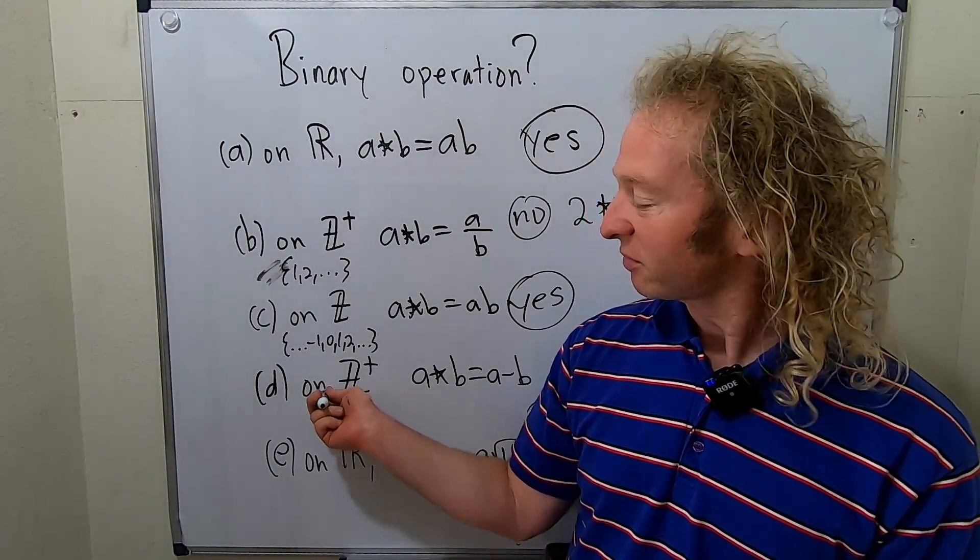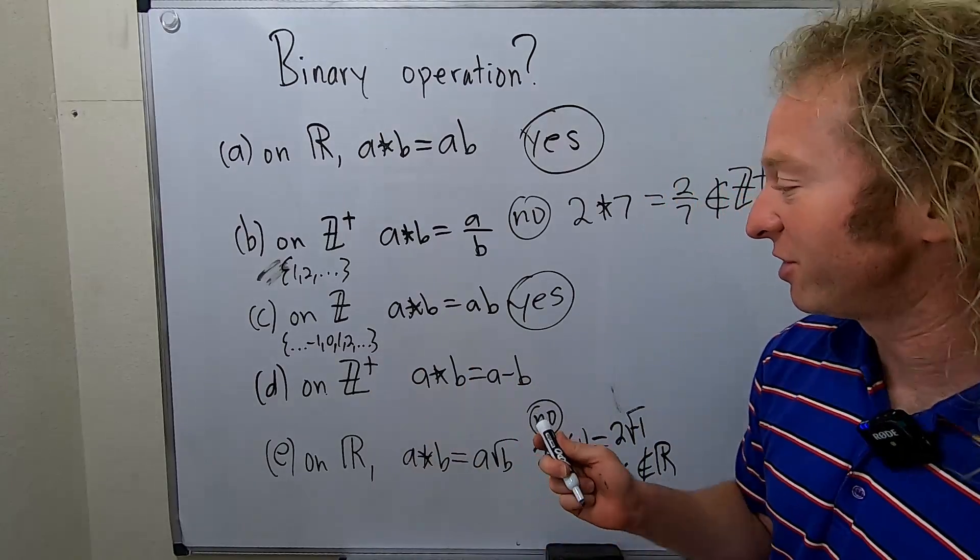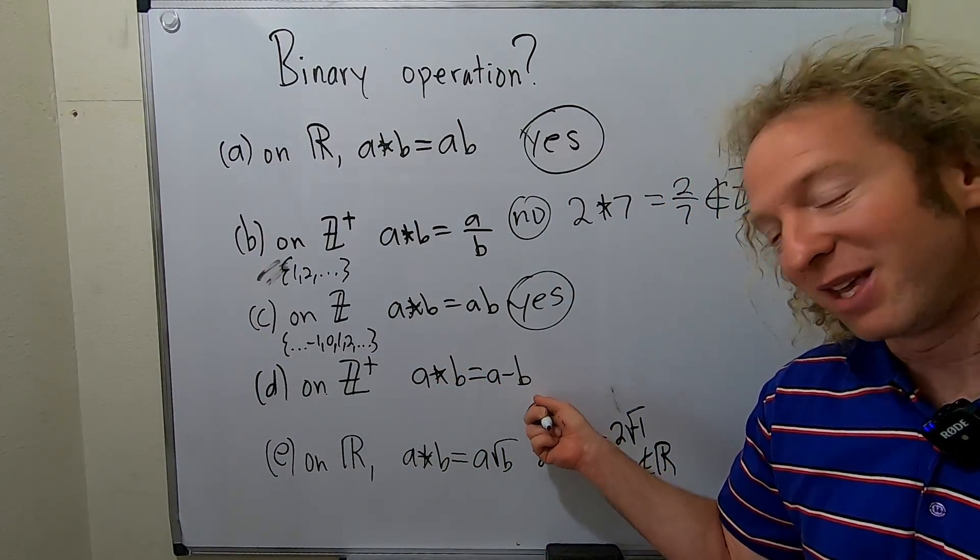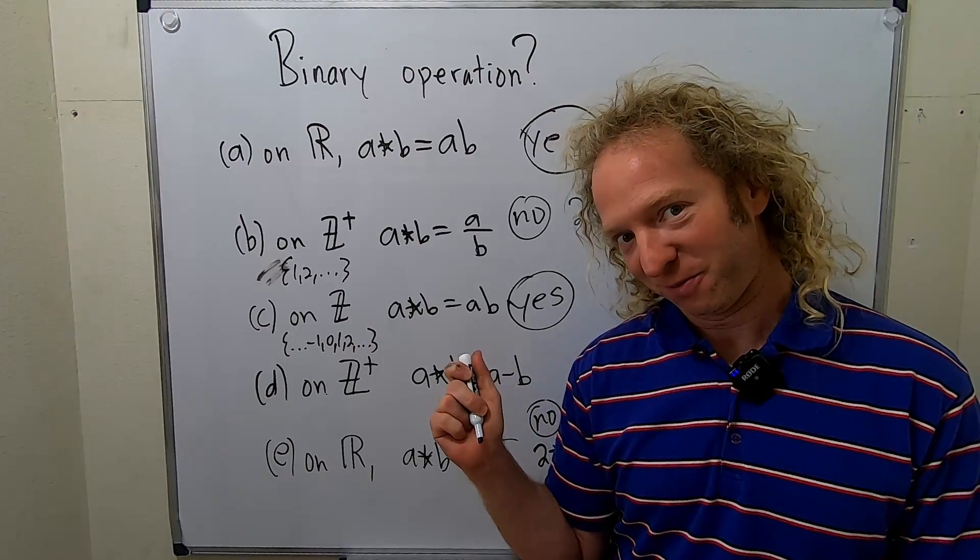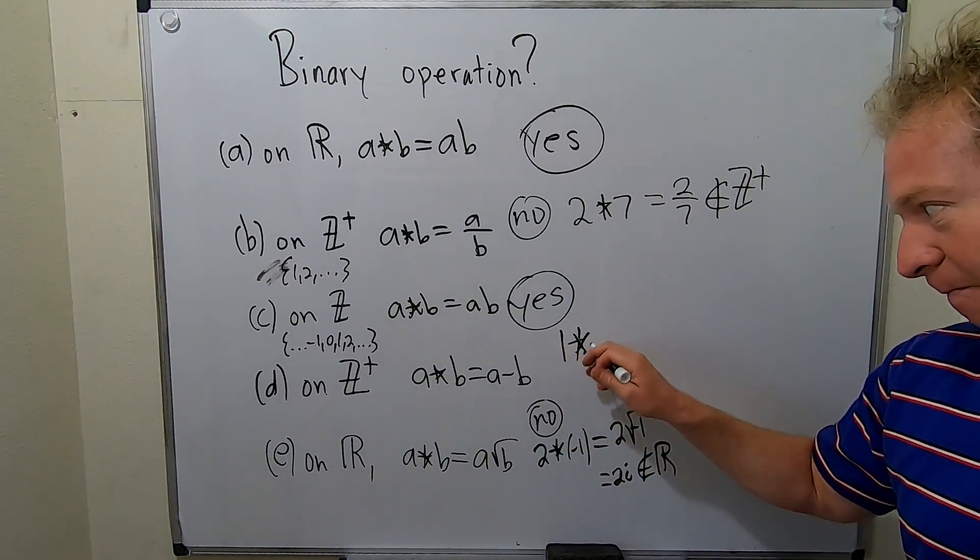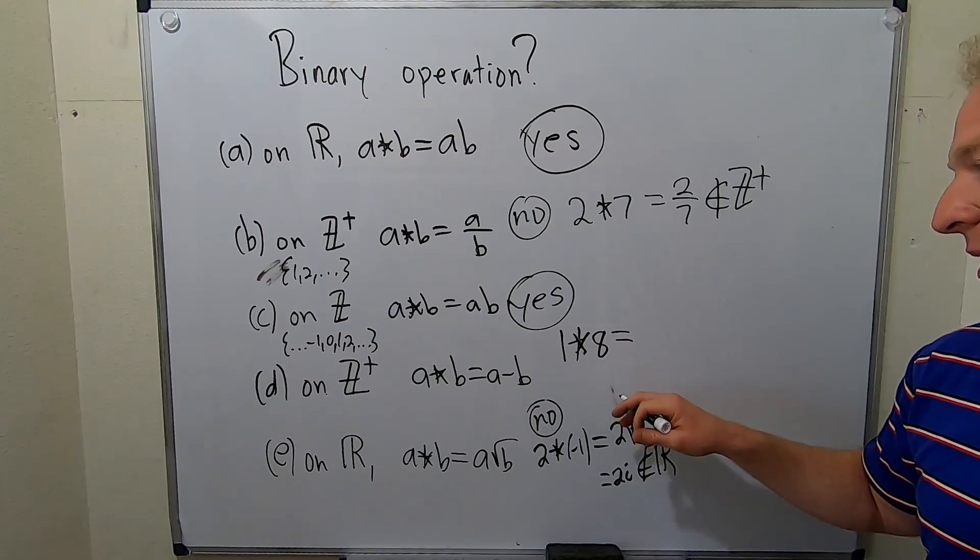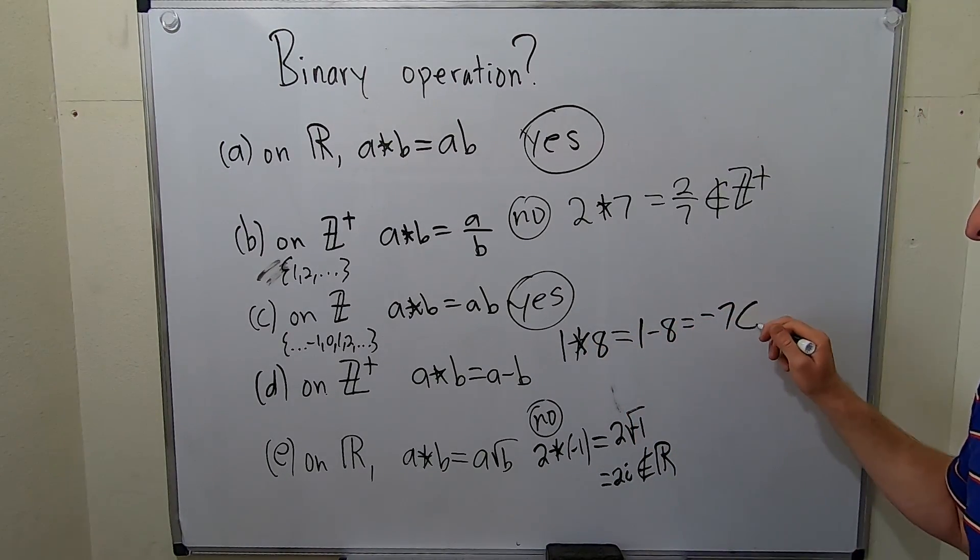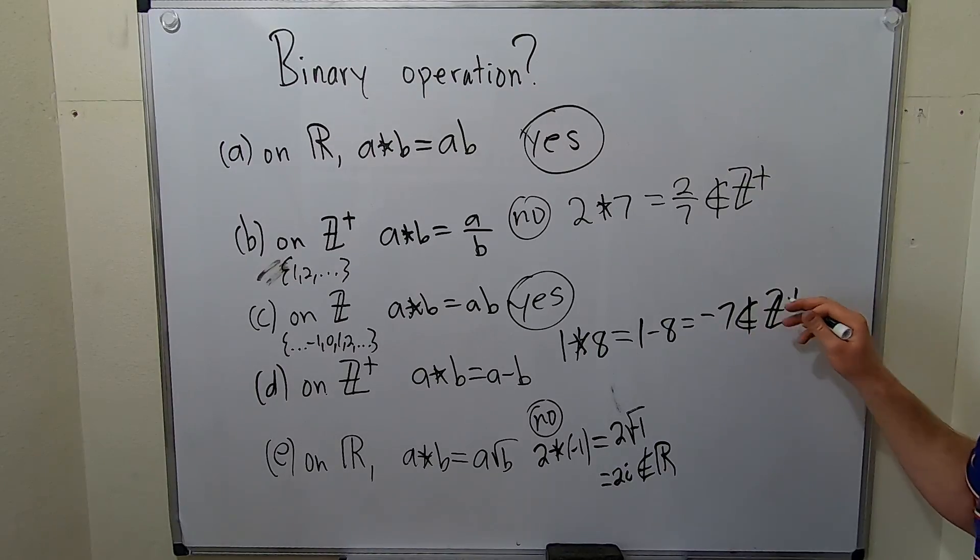Here's an interesting example. On the set of positive integers, if you star a and b, that would give you a minus b. Is that a binary operation? Well, no. Because you can take, say, one star eight. That would be one minus eight, which is negative seven. That is not a positive integer. That fails.